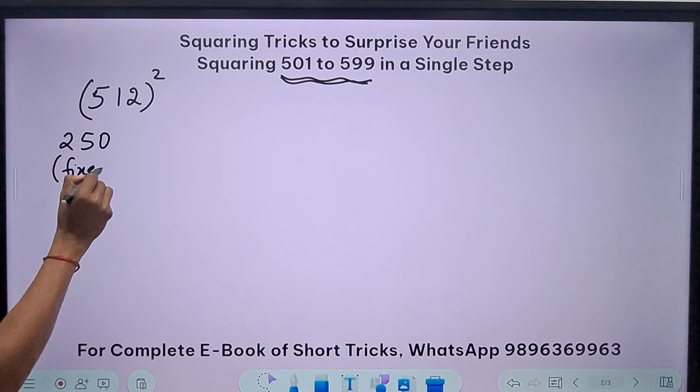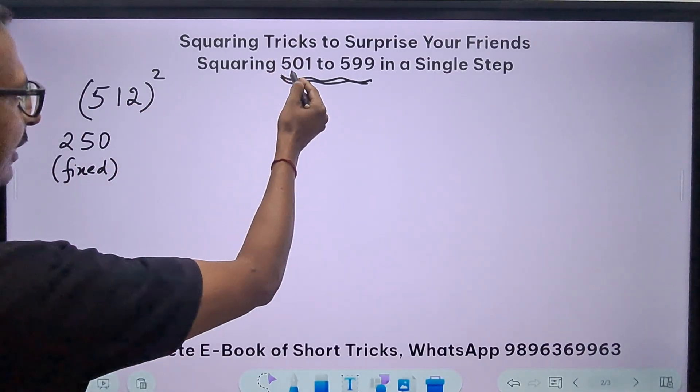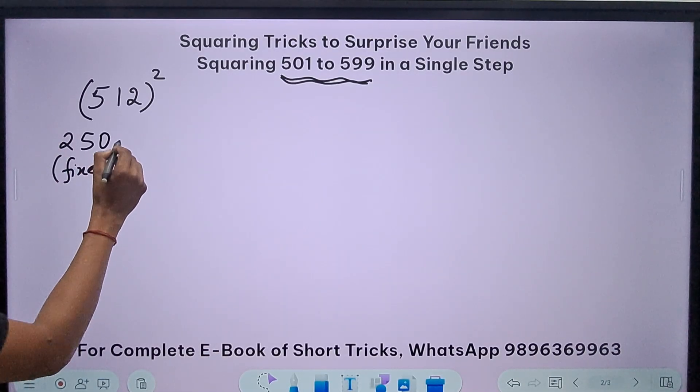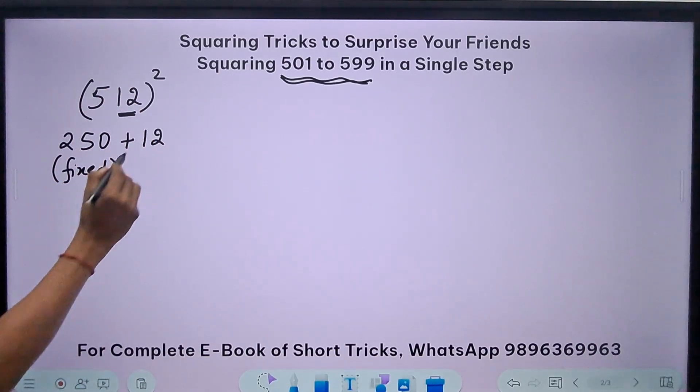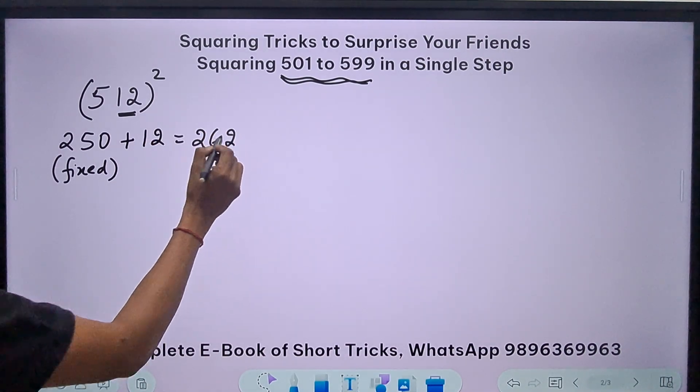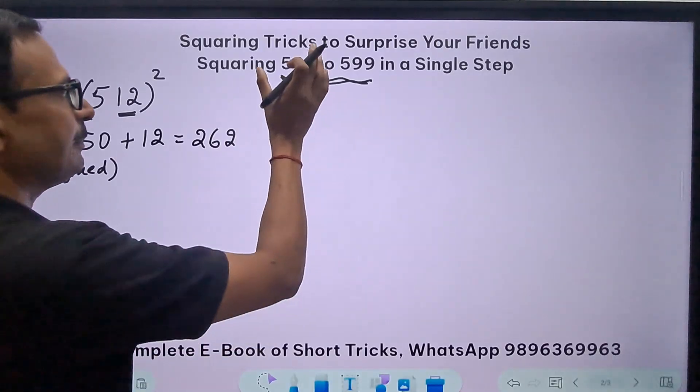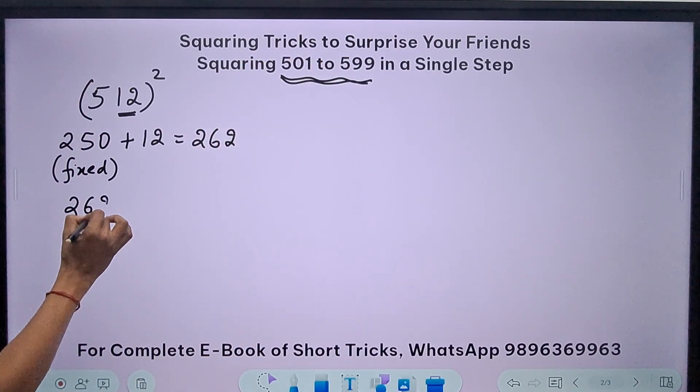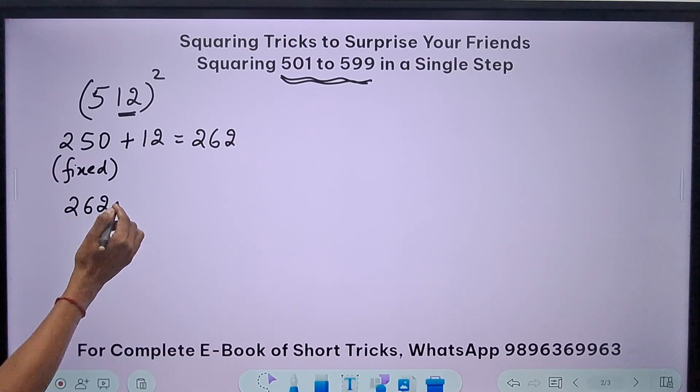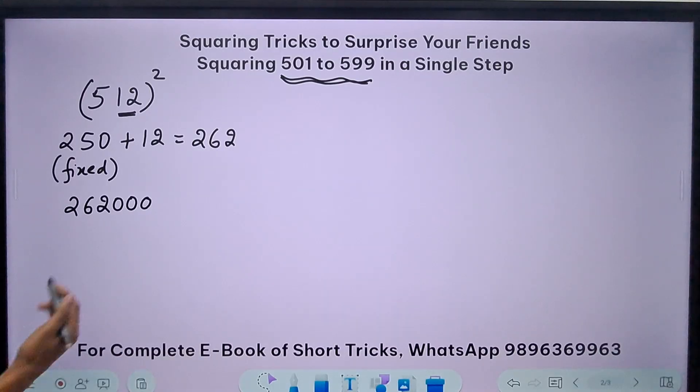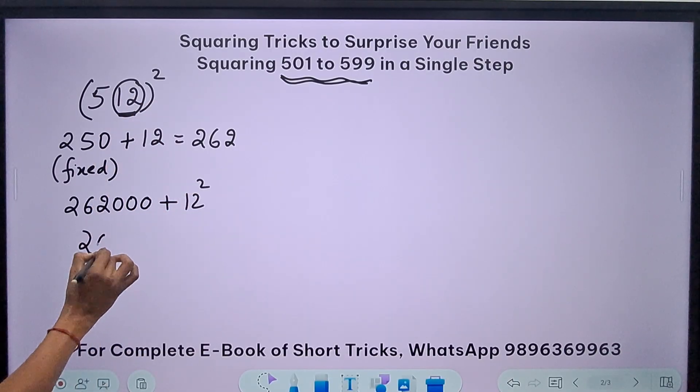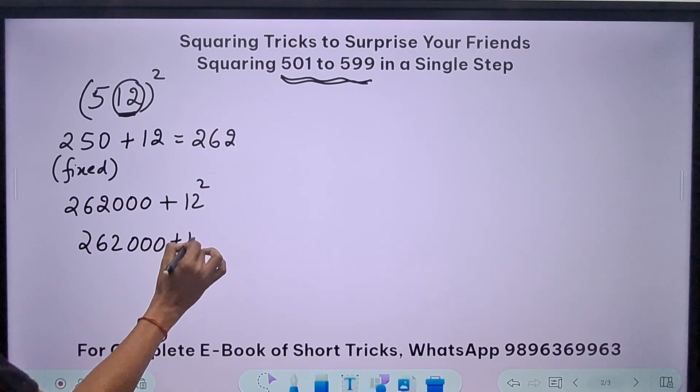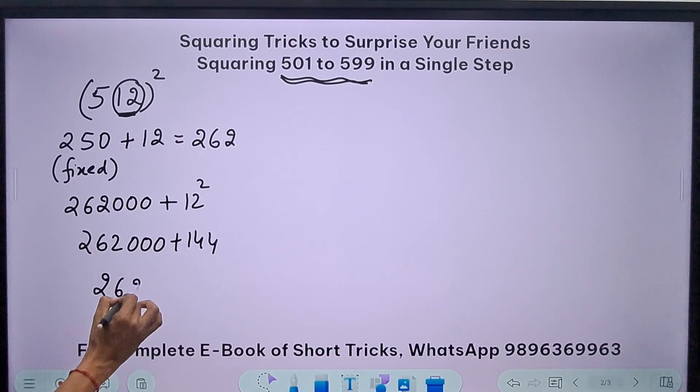So what will I do? I have a fixed number 250. Now this is the reference number, fixed number which I have to use for finding the square of 500 and 600. So 250 is a fixed number plus the excess number. So above 500 I have 12 here, so let's add 12 to this. So you will get 262. And now just like in the previous case I multiplied by 100, now I am going to multiply 262 by 1000, and that gives me 262 triple 0. And so I have to add something to this, just like the previous case. 12 square. 12 square is 144.